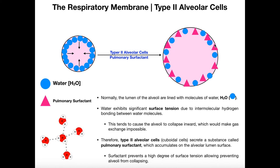So in order to have a fully expanded alveolus that's good at exchanging gases, you have to have pulmonary surfactant. These type 2 alveolar cells produce pulmonary surfactant; it ends up lining the lumen of the alveolus on the walls, breaks the hydrogen bonds between the water that's already there, prevents a large degree of surface tension, and prevents those alveoli from collapsing. That's extremely important.